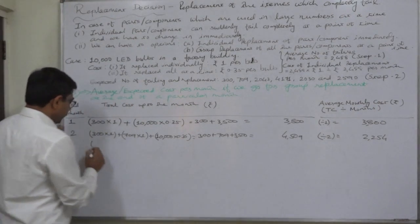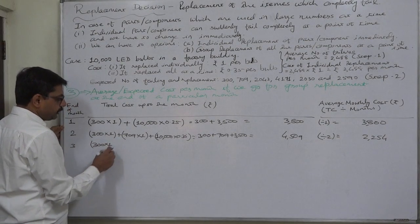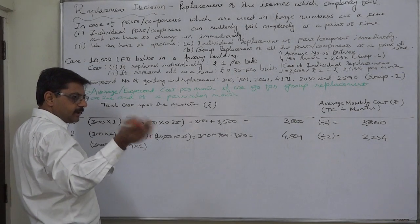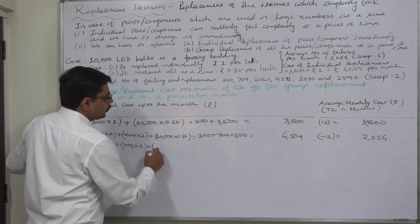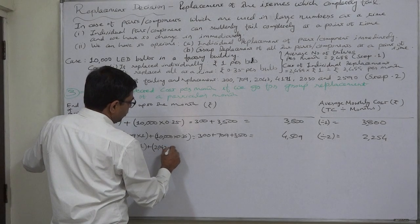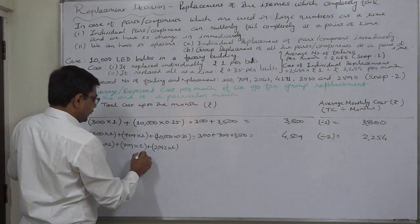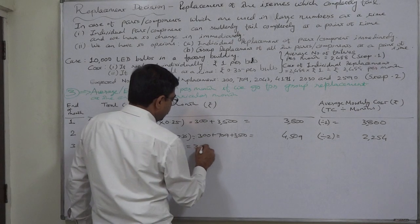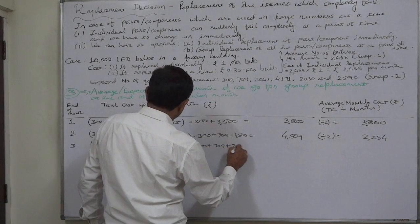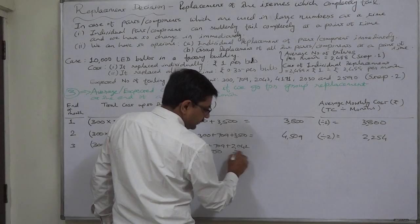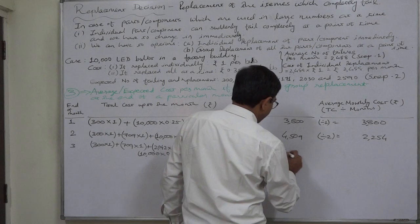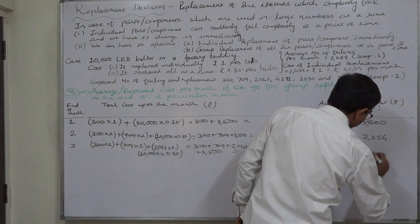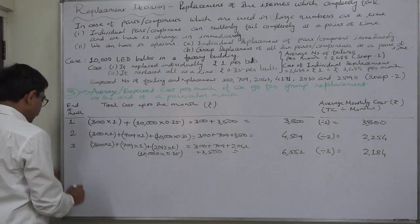If we go for group replacement at the end of the third month, we replace 300 bulbs individually in the first month, 709 individually in the second month, and 2042 individually in the third month. On the last day of the third month, we replace all 10,000. Total cost is 300 plus 709 plus 2042 plus 3500, which equals 6551. Divided by three months, the average monthly cost is rupees 2184. Notice this is decreasing.